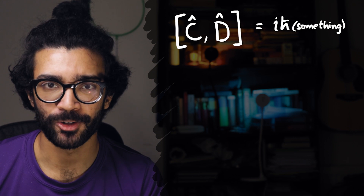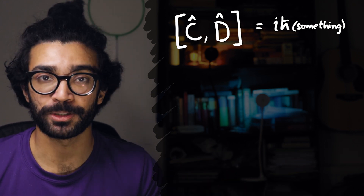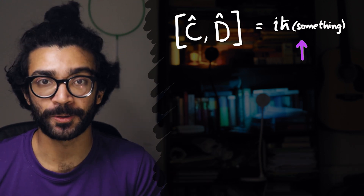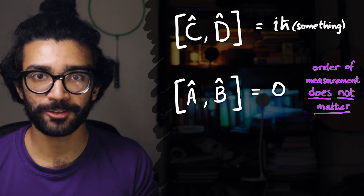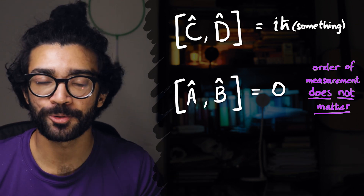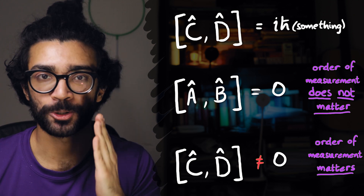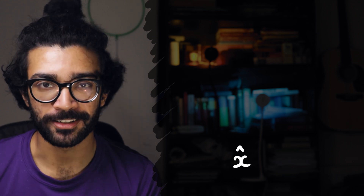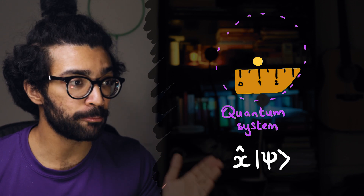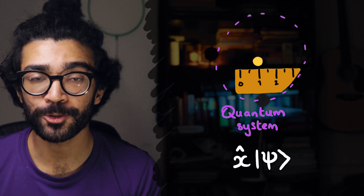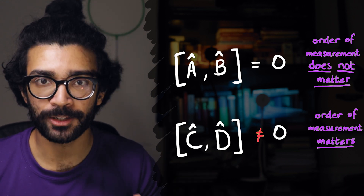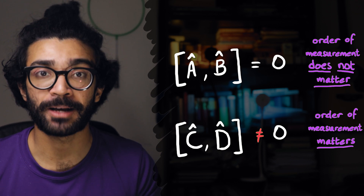Coming back to commutators that are not equal to zero — where the order in which we make two measurements matters — for our purposes we just need to know that if the commutator is zero, then the two operators commute and the order of measurements doesn't matter, but if it's non-zero, the order does matter. So far we've learnt about operators and commutators. Operators are mathematical entities that correspond to making a measurement on a quantum system in real life, and commutators are a useful mathematical tool helping us understand whether the order in which we make measurements on our quantum system actually matters.